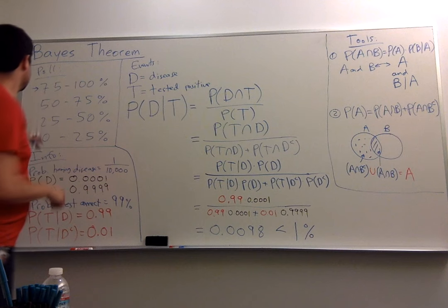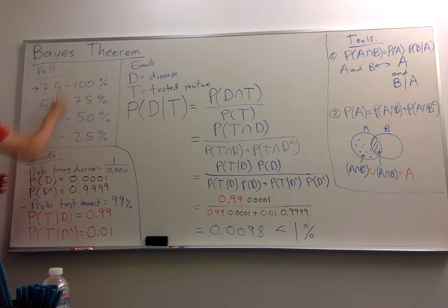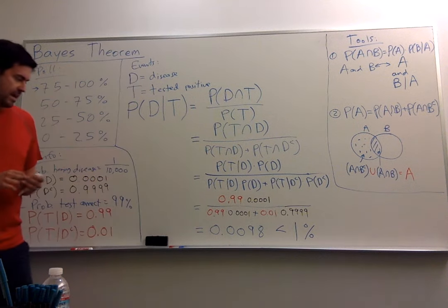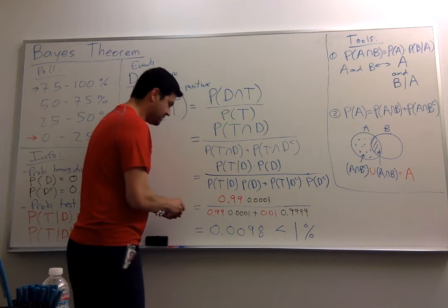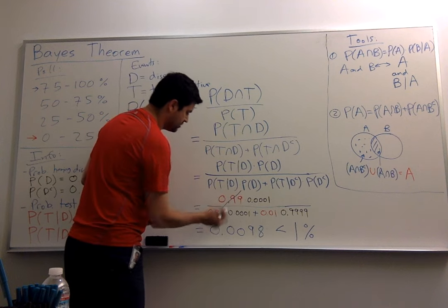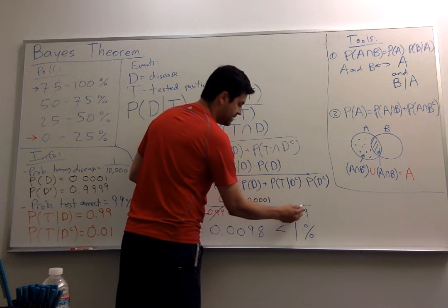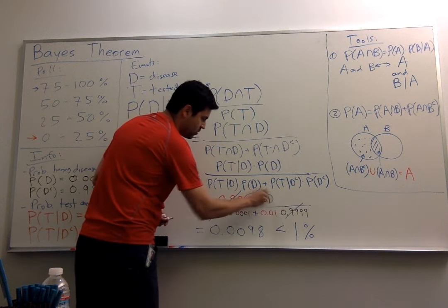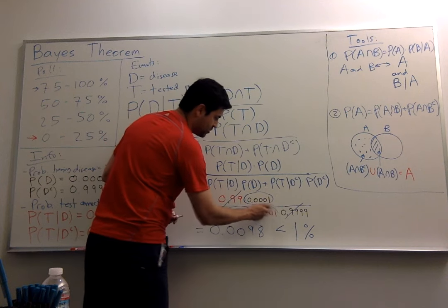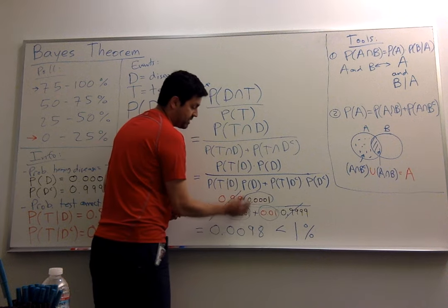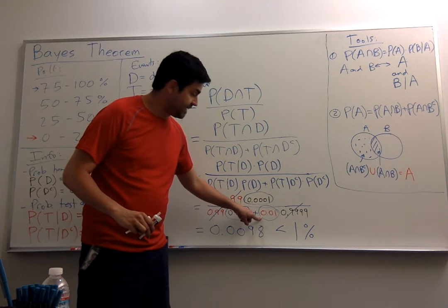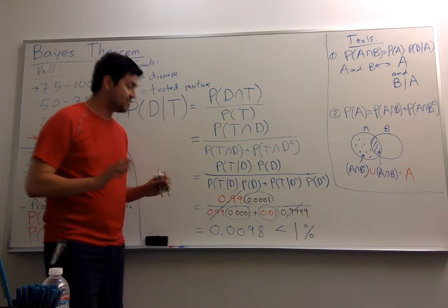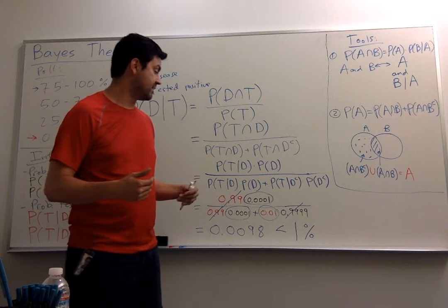So, who won the poll? It seems like the answer is in the 0 to 25% range. It's not 99% like I thought — it's less than 1%. But why? It seems very strange. Let me explain in a few ways. Notice that 0.99 is very close to 1, and 0.9999 is also very close to 1. So this is roughly 1/10,000 divided by 1/10,000 plus 1/100. This 1/100 is huge compared to 1/10,000, and so this is the number that rules. Remember that this is the probability that the test fails, and this is the probability that you're sick. If the test failing has a much higher probability than you being sick, the test is meaningless.